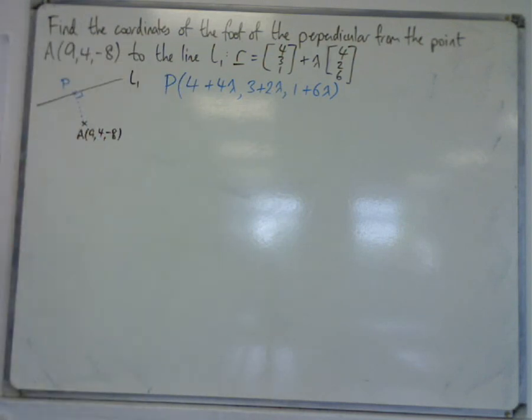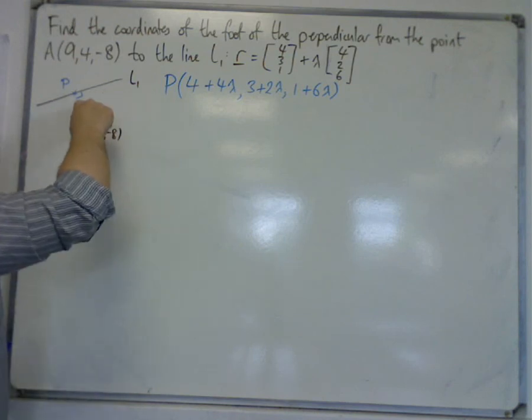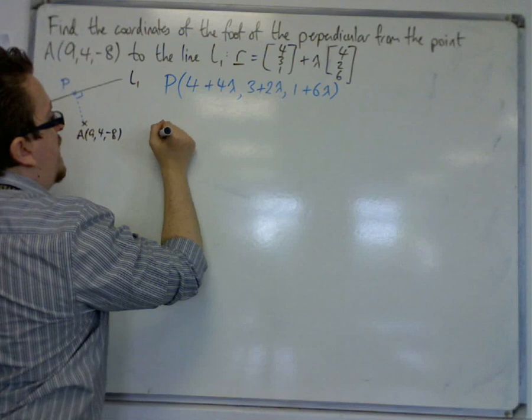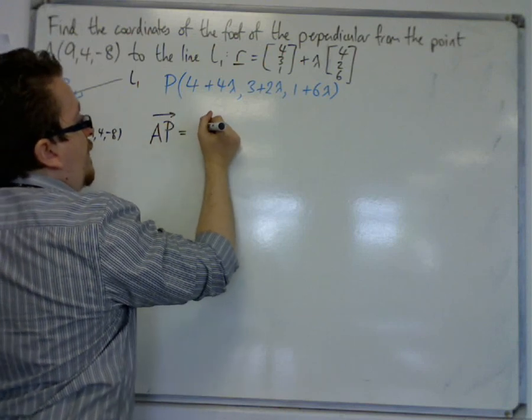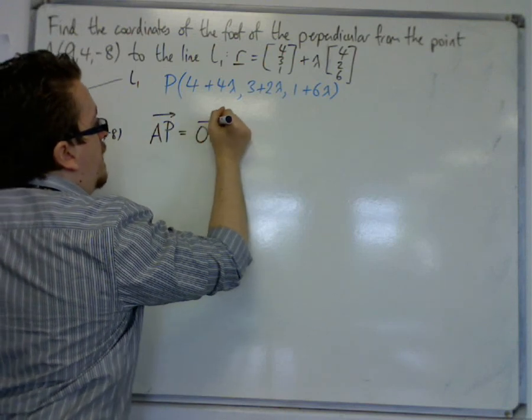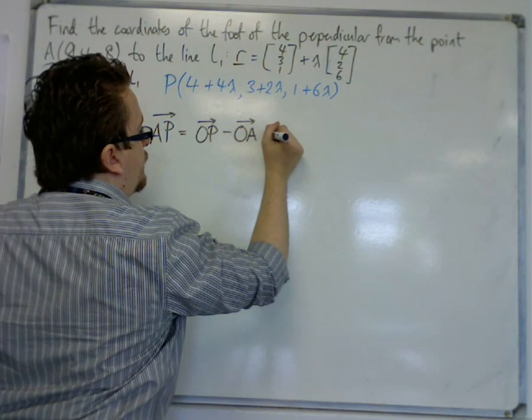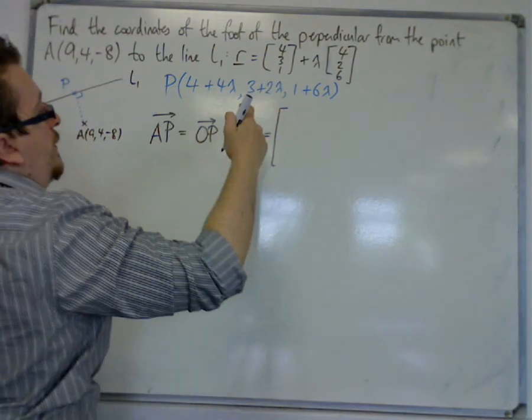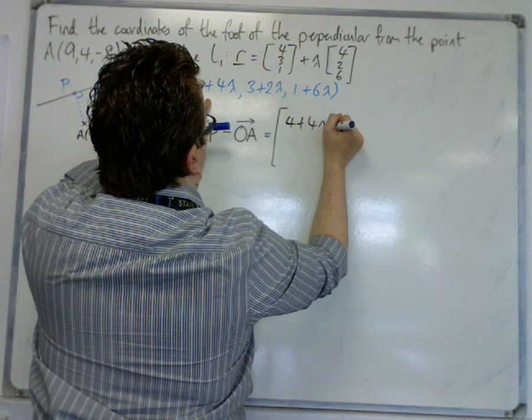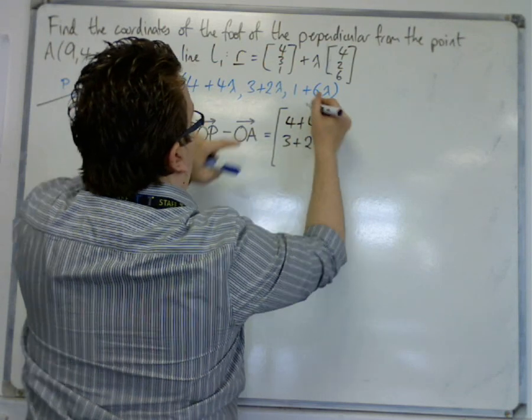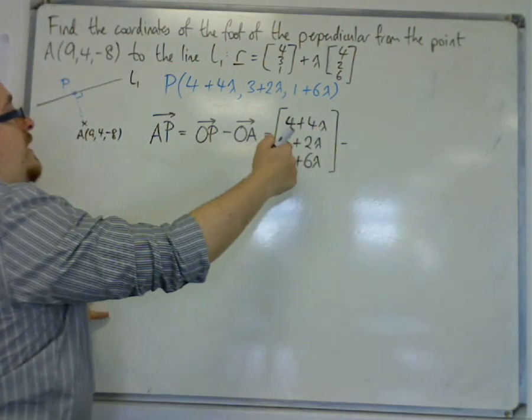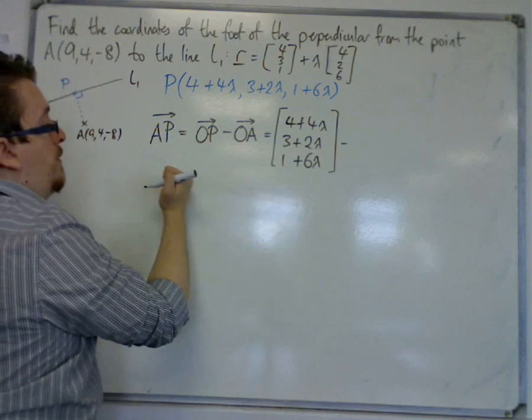So what we have here, and what will likely be what we need to do, is we need to find that vector AP. So in finding AP, remember this is the vector OP minus OA. So we have OP is the position vector of these coordinates: 4 plus 4 lambda, 3 plus 2 lambda, and 1 plus 6 lambda. So that's the position vector of OP, or the coordinates of P.